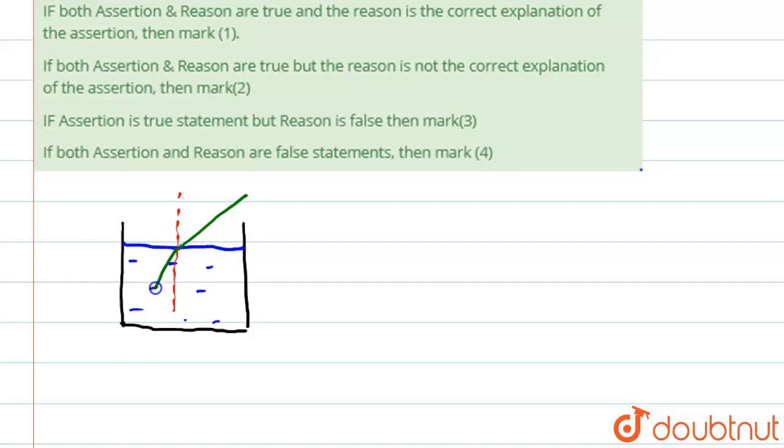So what will happen? Speed of light in water will be less than speed of light in air. That's why this bends towards the normal. Normally it should have gone like this, but now it has bent towards the normal due to refraction.